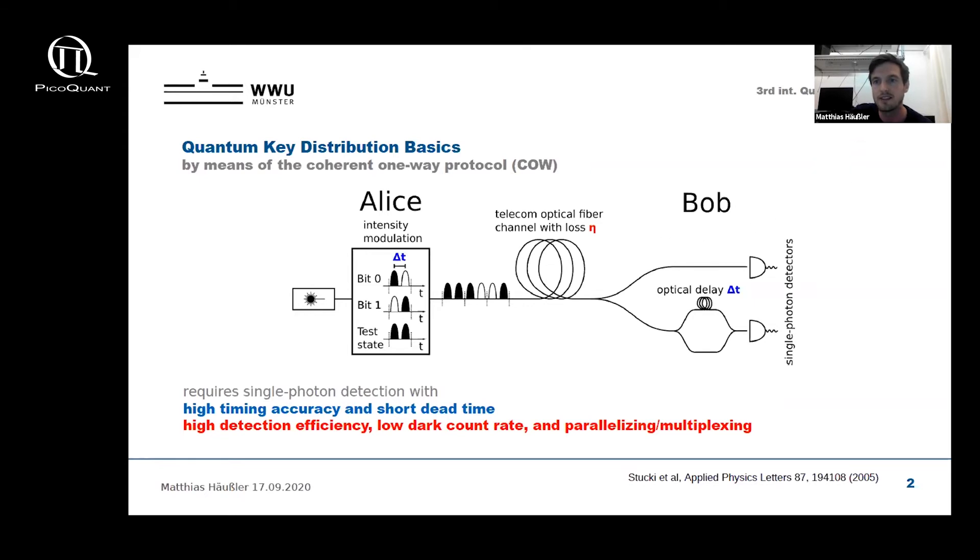These states are now sent to Bob via a telecom optical fiber channel that has an intrinsic loss eta, such that only a fraction of the sent photons actually arrive at Bob's site. At Bob's site, the light is then split and sent into two arms: the upper one actually to measure the bits zero and one sent by Alice to generate a secret key, and the lower one featuring an interferometer and a delay line.